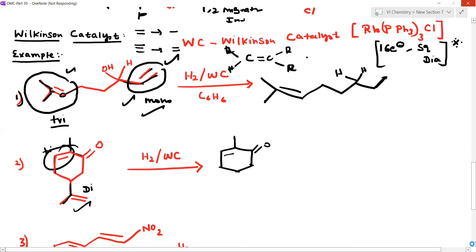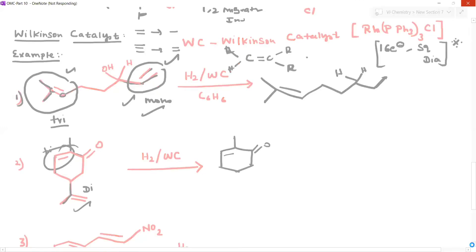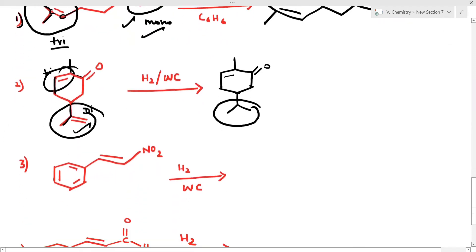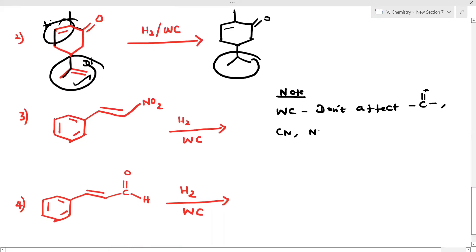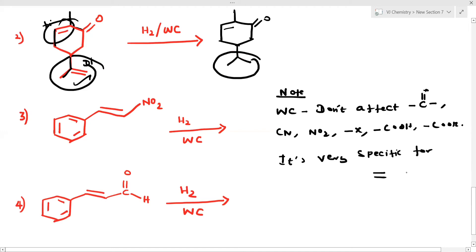Try these two questions and tell me the answer in the comment section. Note: Wilkinson's catalyst does not affect carbonyl groups, cyanide groups, or halogen groups. It is very specific — it is specific for carbon-carbon double bonds only. Using these two rules, try the question and give the answer in the comment section.